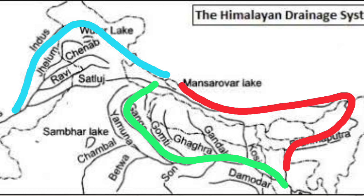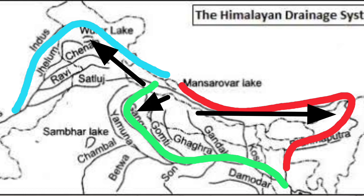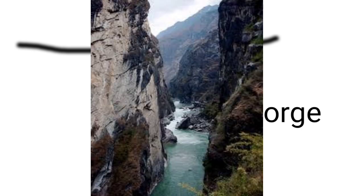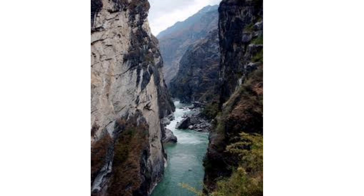The Himalayan rivers consist of the Indus, Ganga, and Brahmaputra, which are originated near Mansarovar Lake, south of the Tibetan Plateau. One thing to notice is that these rivers flow parallel to the Himalayas and then bend southward, flowing in a very deep gorge.